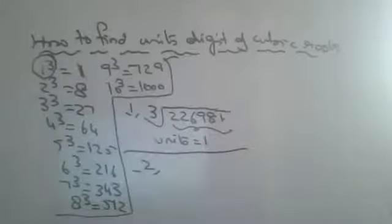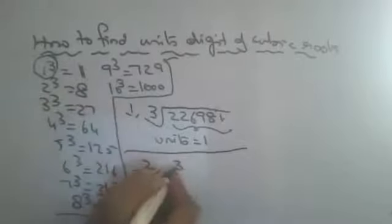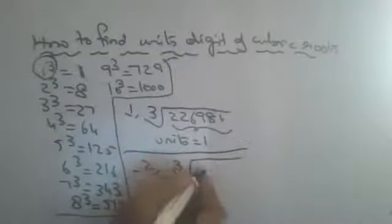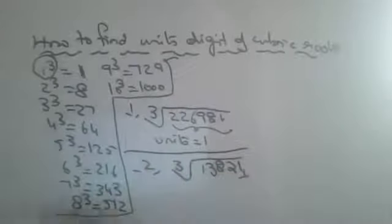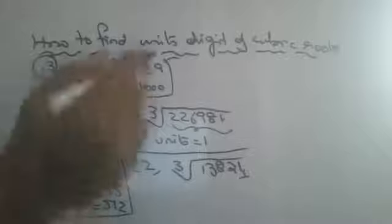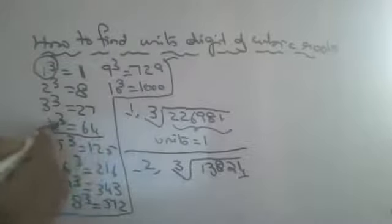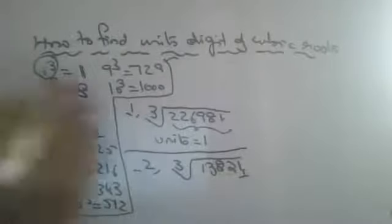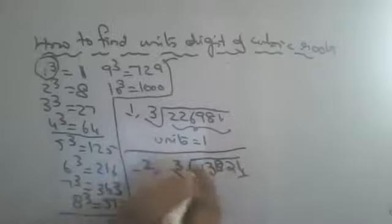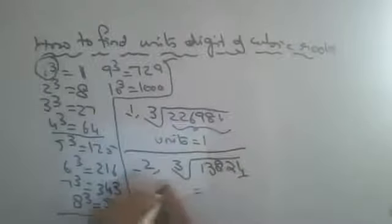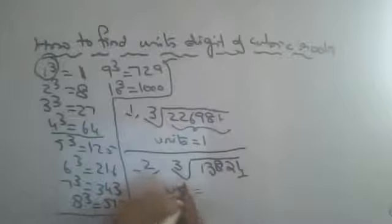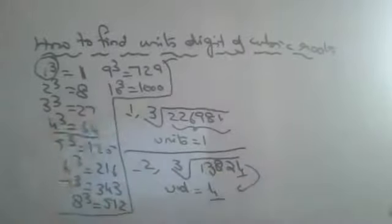Next example: what is the units digit of the cubic root of 13824? The last digit is 4. Which cube gives units digit 4? It is 4³=64. So whether it is 64, 74, or 84 — the units digit will compulsorily be four only.